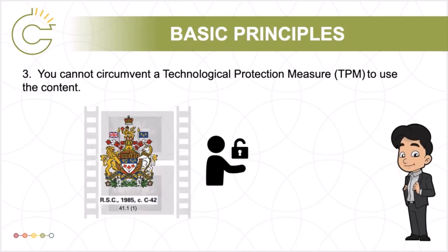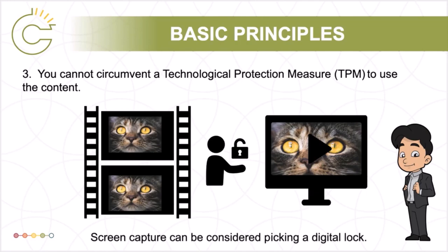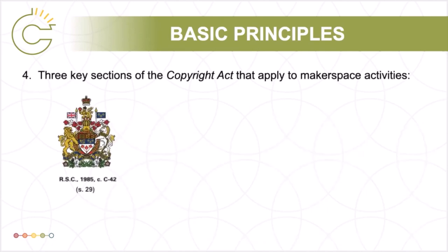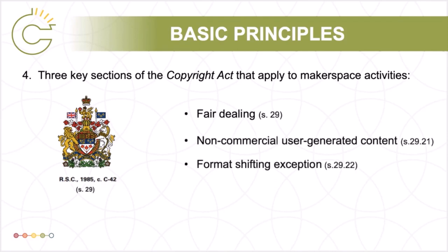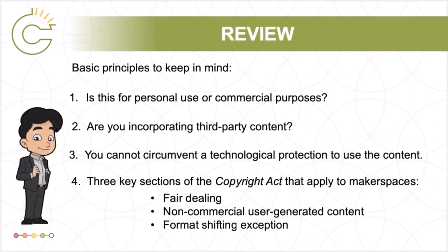For example, if Sandy wanted to copy a scene out of their favourite Hollywood movie and paste it into a movie they are making with makerspace equipment, then they would likely have to circumvent a technological protection measure. While a scene from a movie playing on a computer could easily be screen captured, this could be considered a circumvention of either the content scrambling system that prevents copying of contents on DVDs and Blu-rays, or download restrictions placed on video streaming services like Netflix and YouTube. Another basic principle is that there are three key sections of the Copyright Act that often apply to makerspace activities: fair dealing, non-commercial user-generated content, and the format shifting exception, all found in Section 29 of the Copyright Act. With these basic principles and copyright exceptions in mind, let's see where Sandy might run into copyright concerns and how these can be resolved.